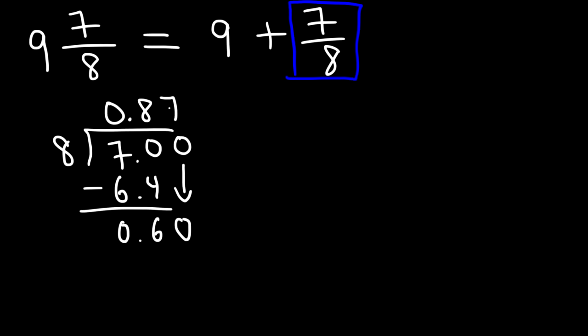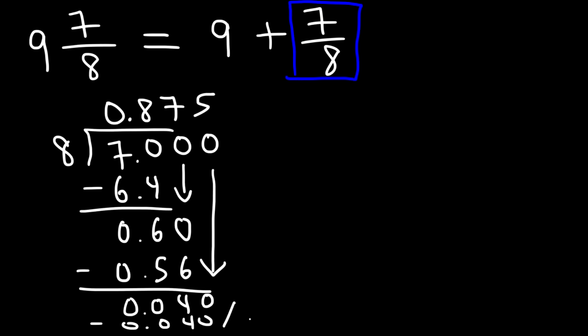Now how many times does 8 go into 60? 8 goes into 60 seven times. 8 times 7 is 56. 60 minus 56 is 4. So if we add a 0 and get 40, 8 goes into 40 five times. And so at this point we're going to get a remainder of 0.